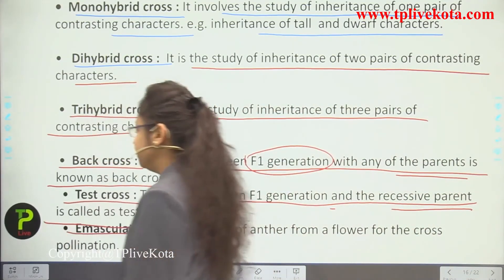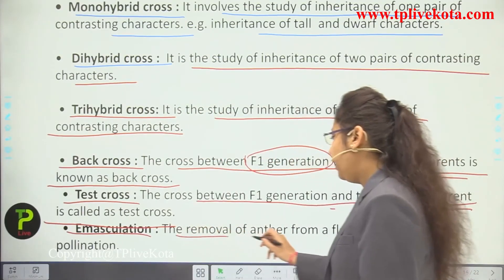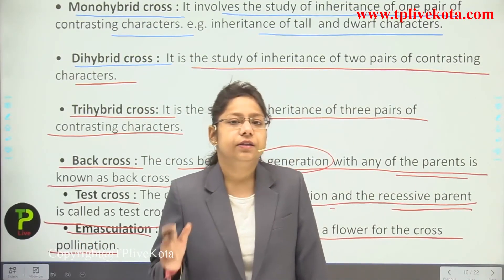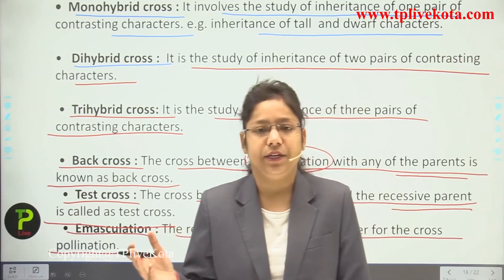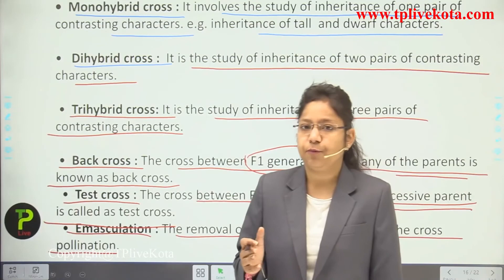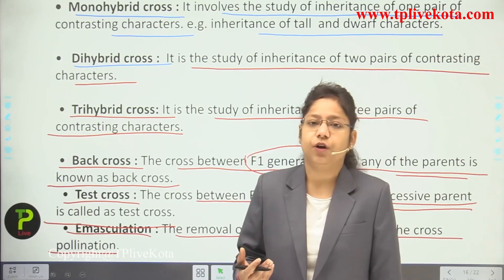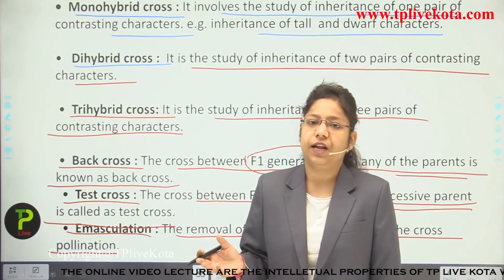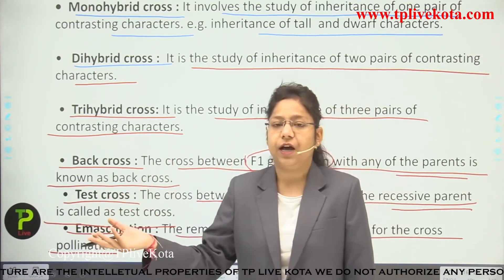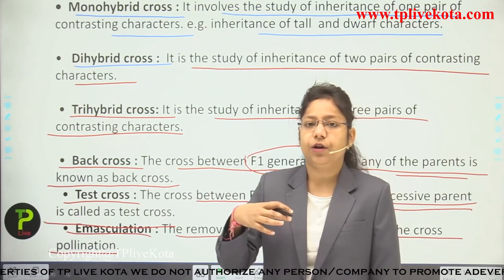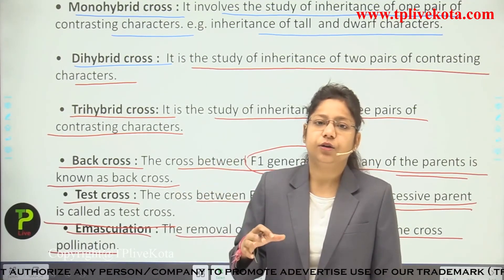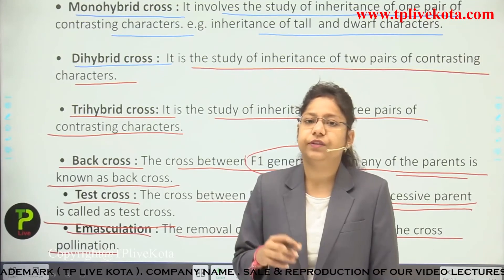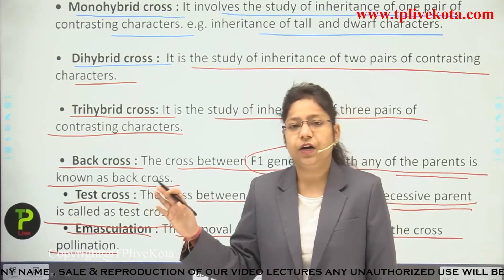Emasculation is the removal of anther from a flower for the purpose of cross pollination. If anthers are present on a flower, there is a chance the flower will self-pollinate. To stop self-pollination, we remove the anthers — this is emasculation. After removal, pollen grains from another flower come through wind or air pollination and stick to it, allowing fertilization to occur.